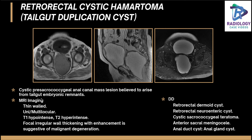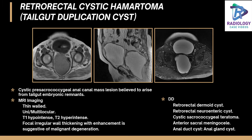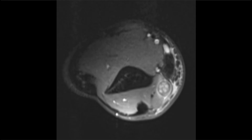On MR imaging, you should see a thin-walled uni- or multilocular lesion that is T1 heterointense and can be T2 hyperintense. Enhancement can sometimes be seen on post-contrast sections. These are duplication cysts and you may not see any communication with the rectum. Differential diagnoses include retrorectal dermoid cyst, retrorectal neuroenteric cyst, cystic sacrococcygeal teratoma, and anterior sacral meningocele.